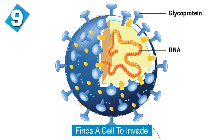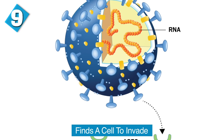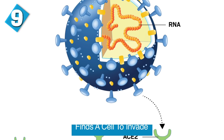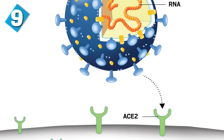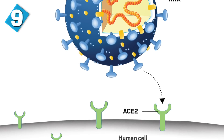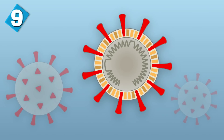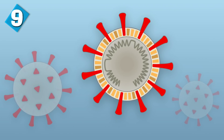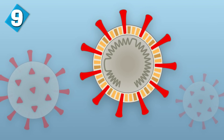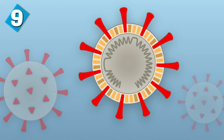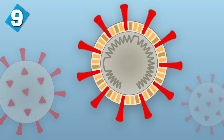You can see the spikes on this virus. If you take a look at the surface of the virus, it consists of protein, and these protein spikes are the key to the virus finding a cell to invade in your respiratory tract. These spikes help the virus find and bind to ACE2, which is a protein on the surface of your cells that allows the virus to get inside them.